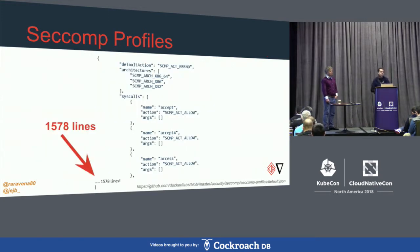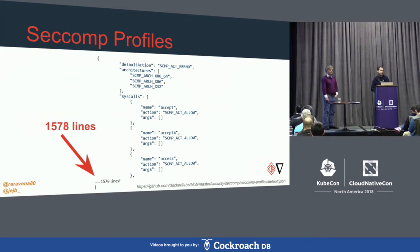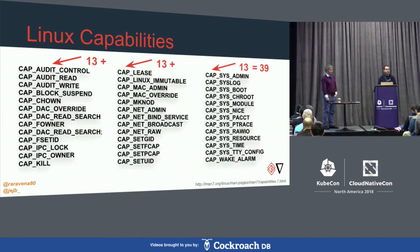The default seccomp profile for Docker has 1,578 lines, making it tedious and difficult to figure out for most people — unless you're an expert.